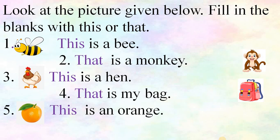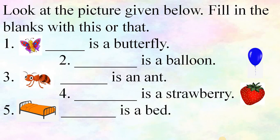Now it's practice time. Put out your notebook and start writing. Question: Look at the picture given below and fill in the blanks with 'this' or 'that'. Number 1: That is a butterfly. Number 2: That is a balloon. Number 3: That is an ant. Number 4: That is a strawberry. Number 5: That is a bear.